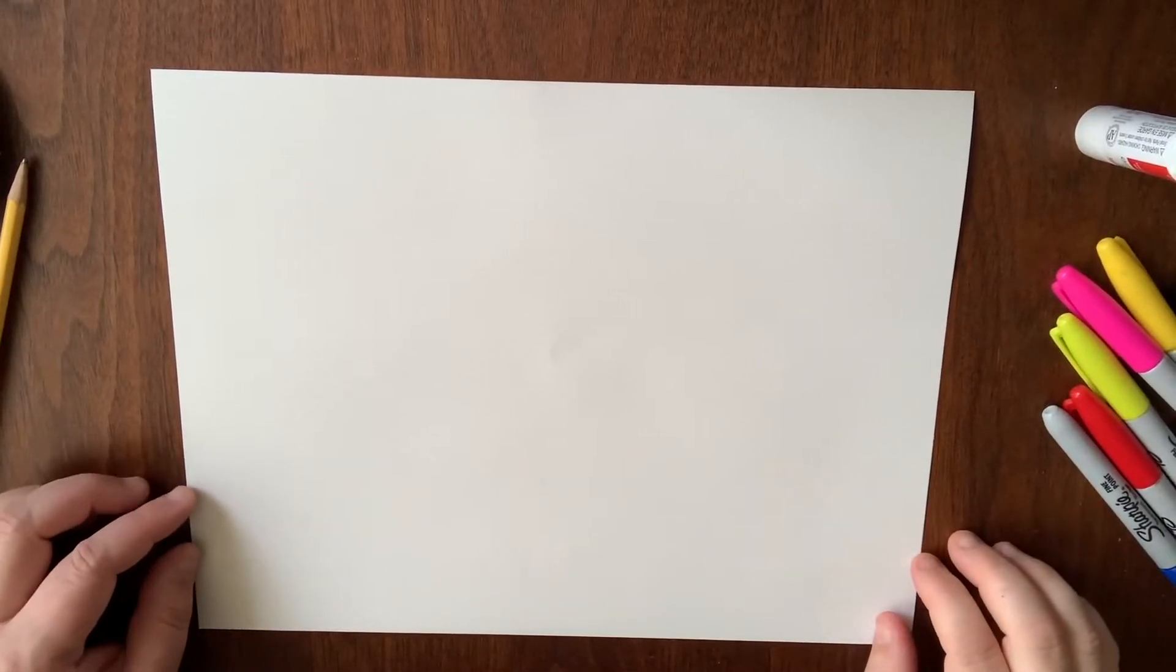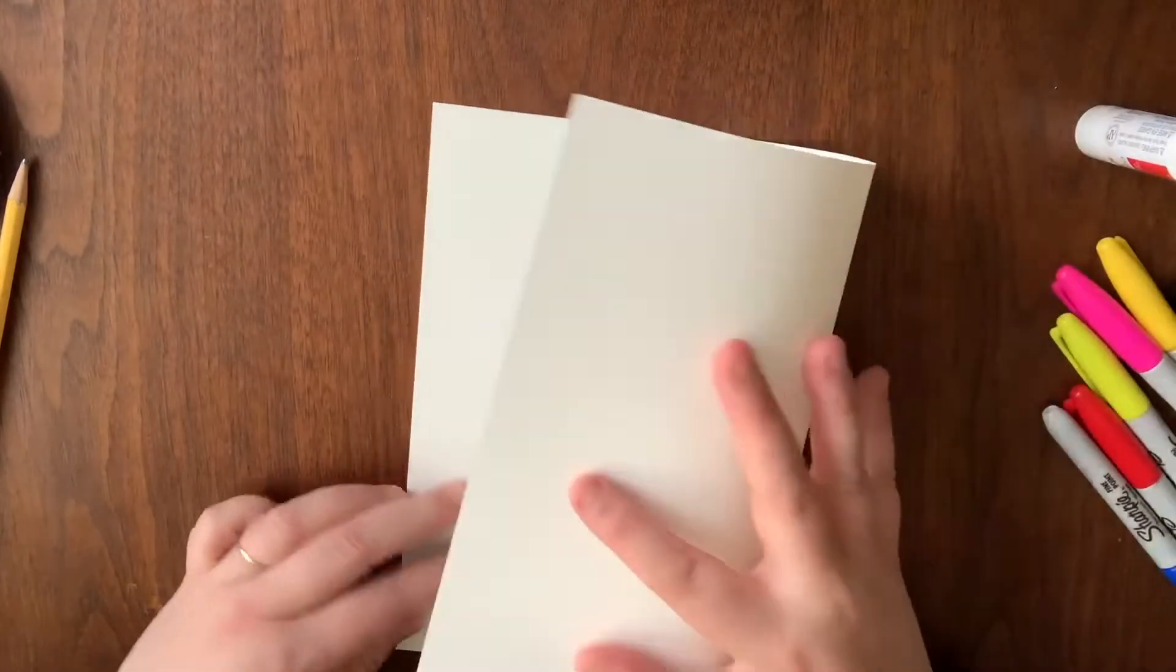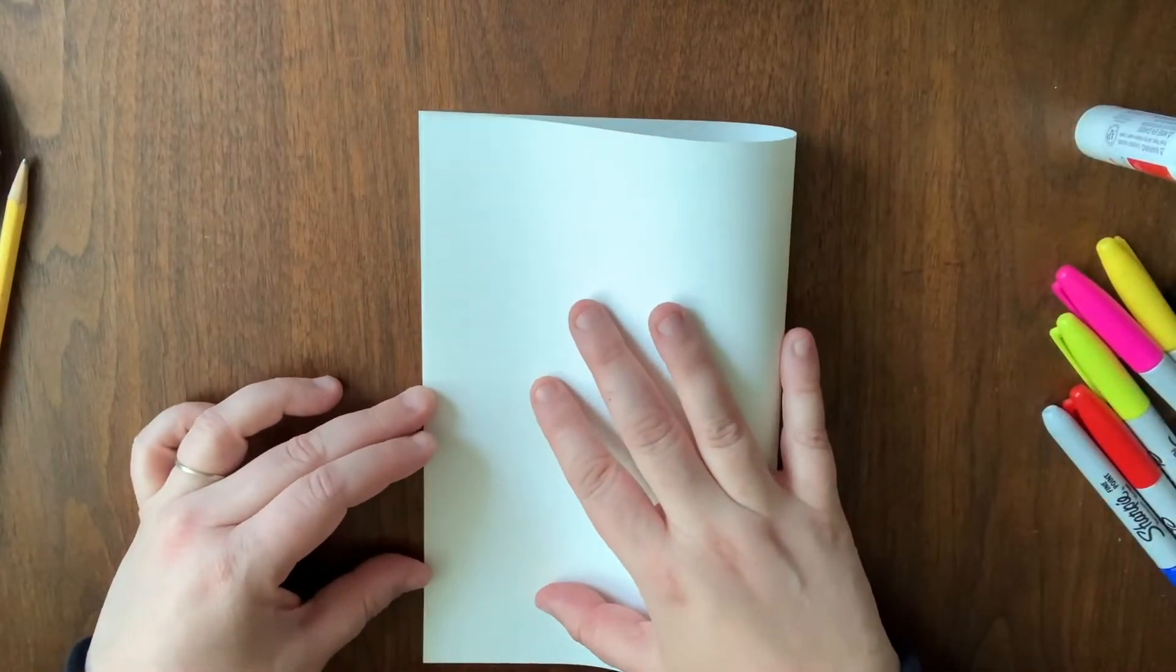The first thing we're going to do is take our piece of paper and fold it in half, hamburger style if you're familiar with that.